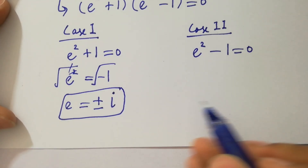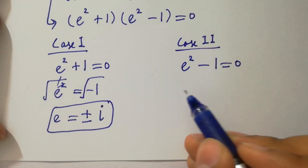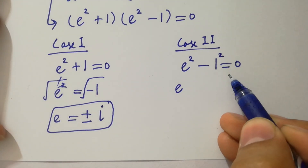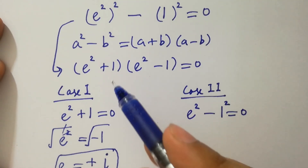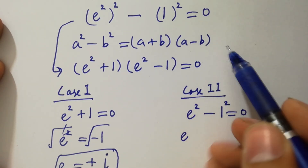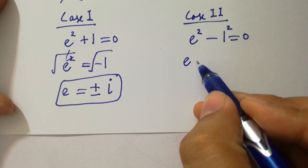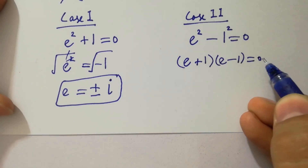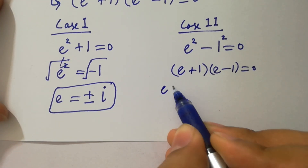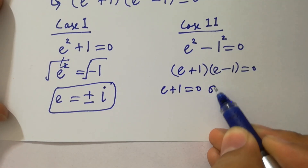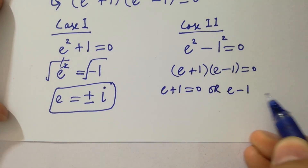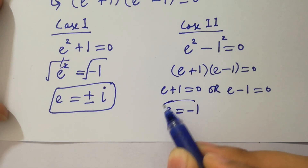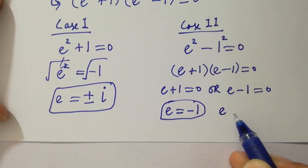So we have two solutions here: plus i and minus i. From Case 2, e squared minus 1 squared equals 0. Apply the formula a squared minus b squared equals (a plus b)(a minus b), so it will be (e plus 1)(e minus 1) equals 0. Therefore e plus 1 equals 0 or e minus 1 equals 0, giving e equals minus 1 and e equals plus 1.